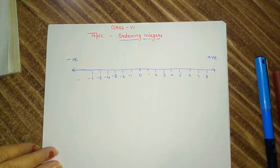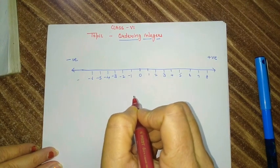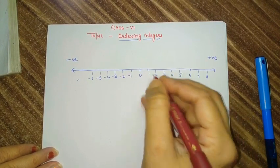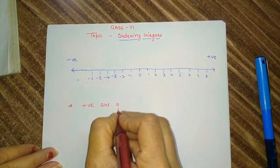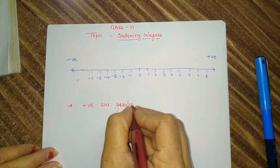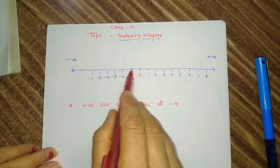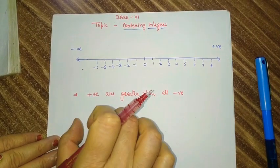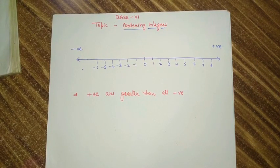Now students, we have to discuss how to compare integers — that means how we come to know that a given integer is bigger or smaller. We have to remember one thing: all the positive numbers are greater than all negative numbers. All the positive integers are greater than negative integers. That is the first clear rule.